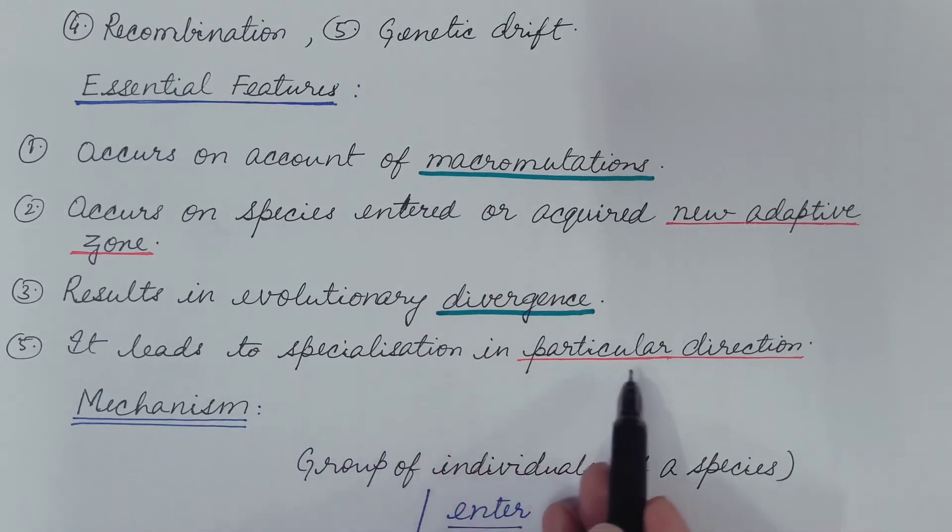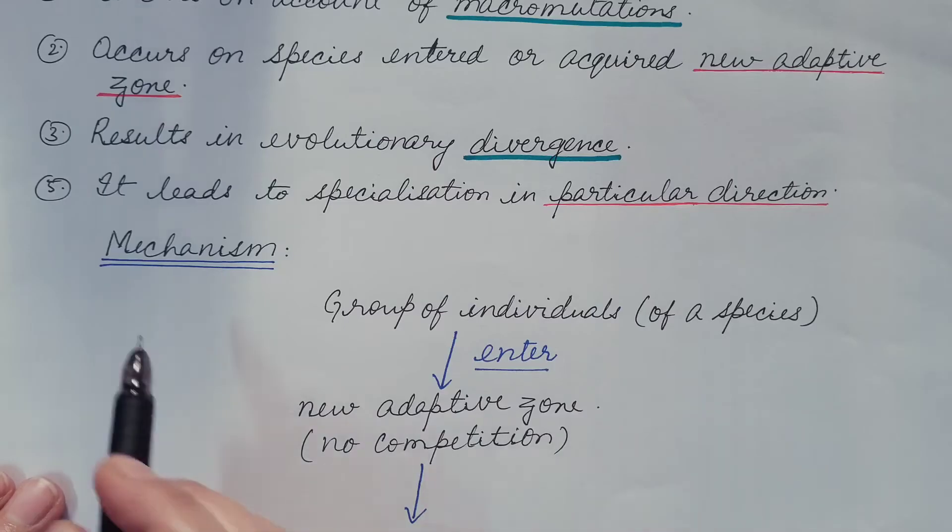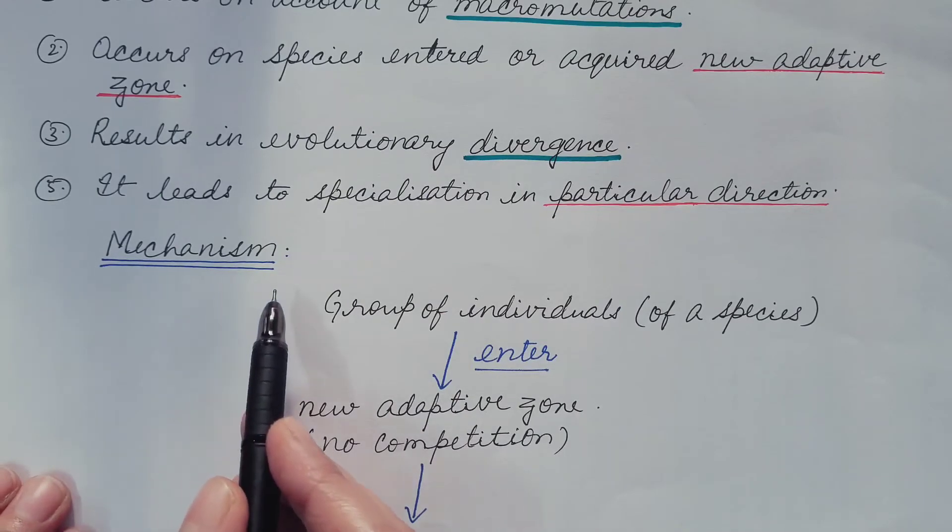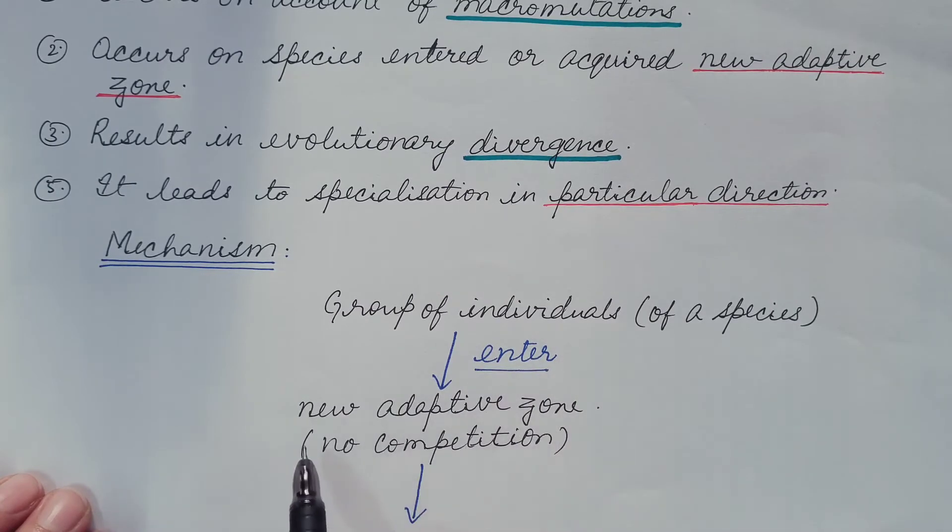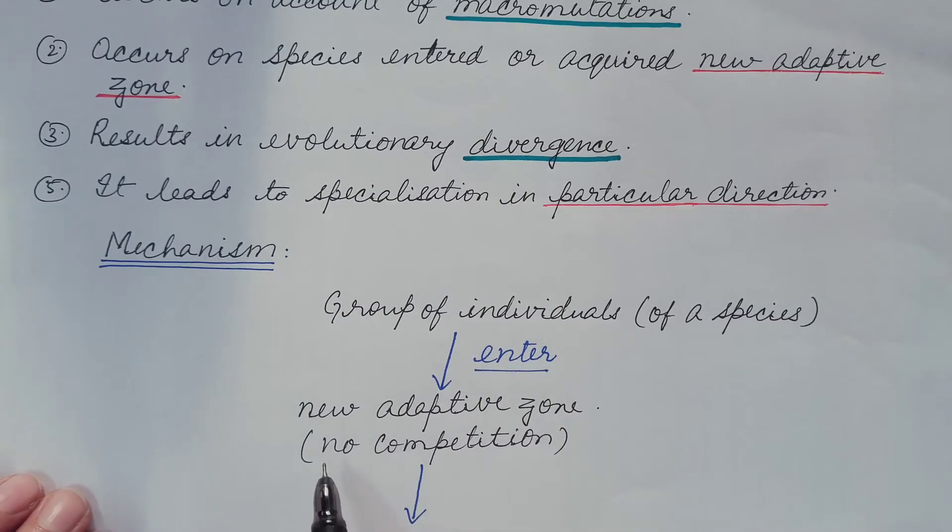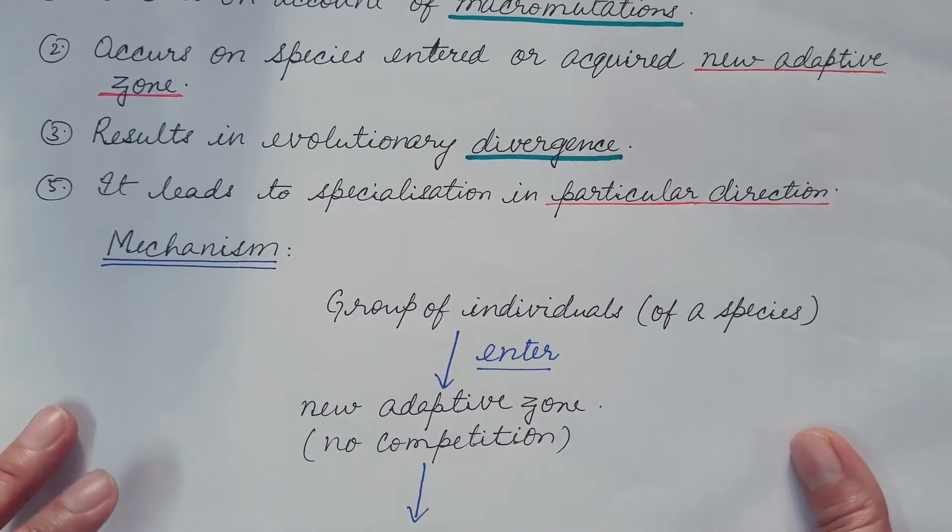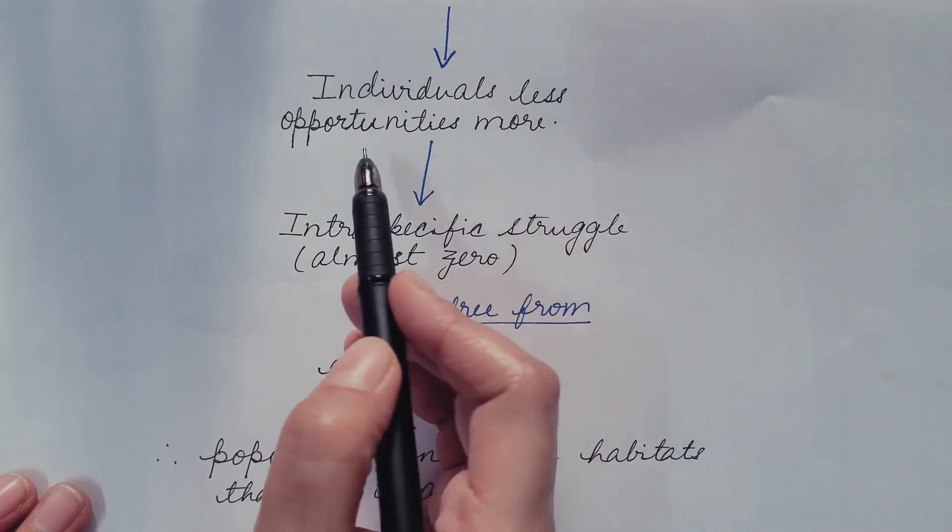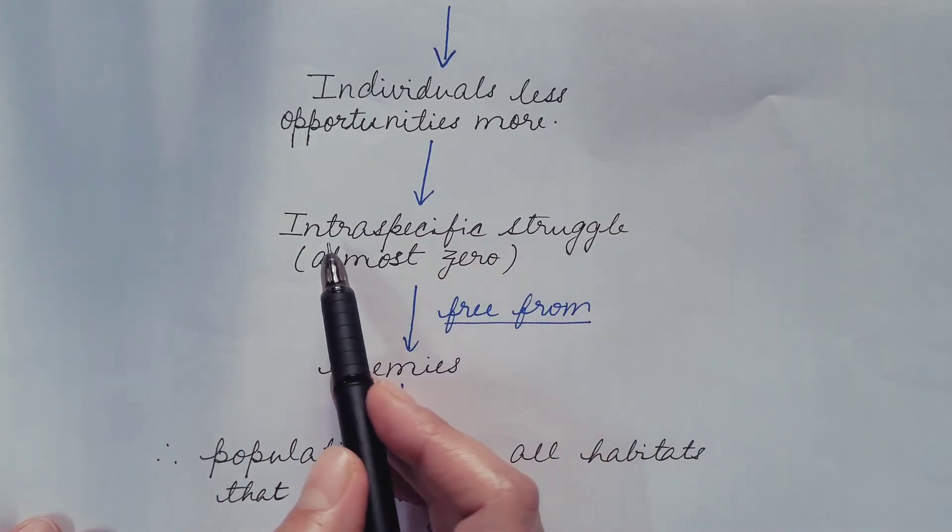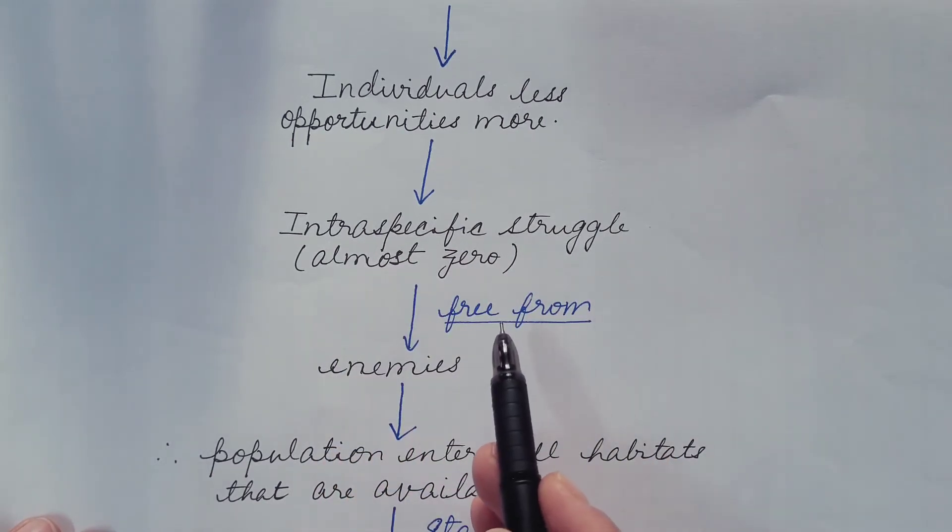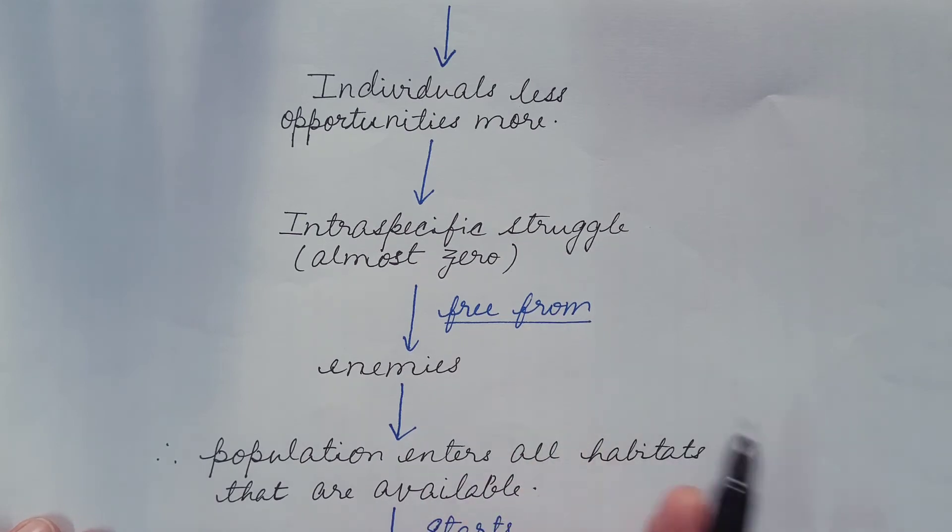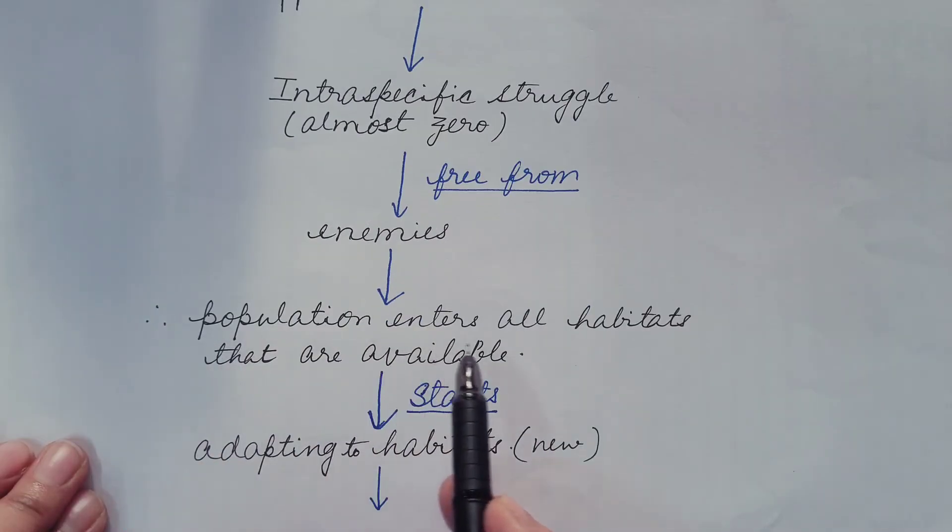Now let us see the mechanism of macroevolution. Group of individuals of a species enter new adaptive zone. And in this new adaptive zone, there is no competition because individuals are less and opportunities are more. Hence, intraspecific struggle is almost zero. And it is free from enemies. Therefore, population enters all habitats that are available.